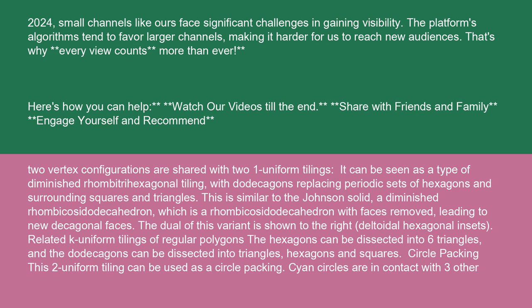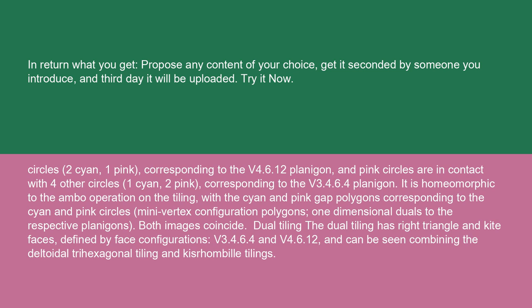Circle packing: this two-uniform tiling can be used as a circle packing. Cyan circles are in contact with three other circles — two cyan, one pink — corresponding to the vertex configuration 4.6.12 planigon. Pink circles are in contact with four other circles — one cyan, two pink — corresponding to the vertex configuration 3.4.6.4 planigon.